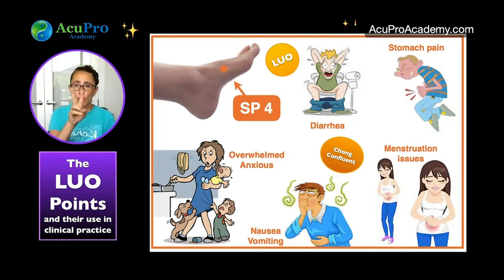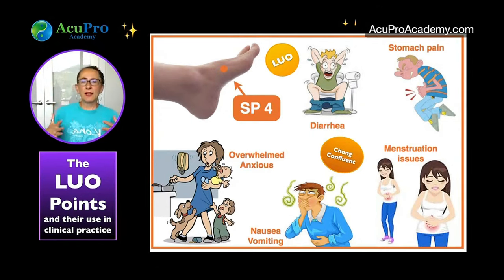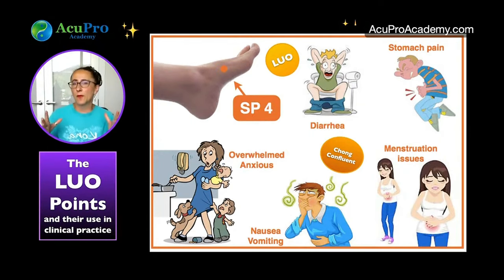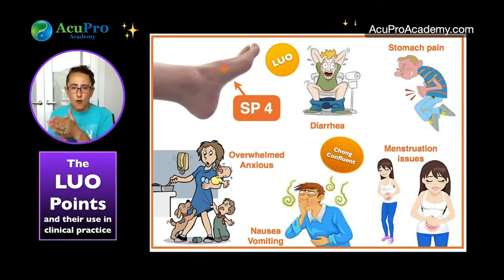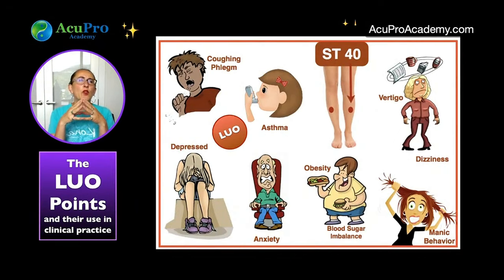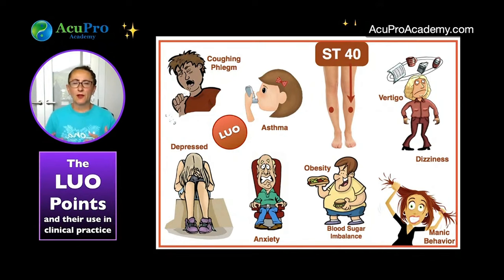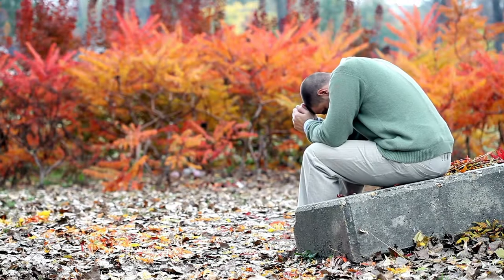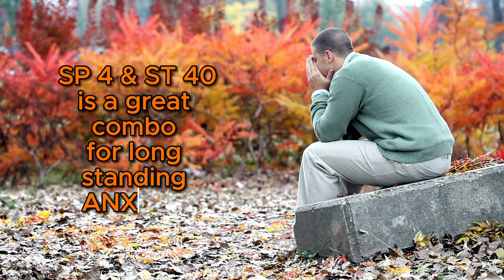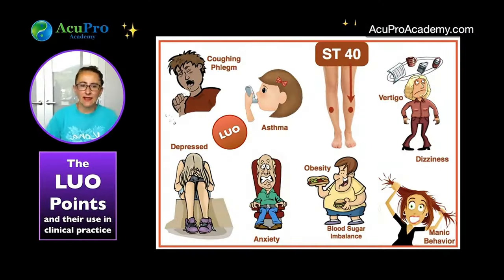The second purpose for SP4 and ST40 is to calm the mind. ST40 is one of the best points for anxiety, and SP4 is related to the Chong vessel — the sea of blood — as it's a Chong confluent point. Together they're great for people who have had anxiety for a long time, even since childhood, releasing the emotional aspect connected to the anxiety. Very powerful in clinical practice.